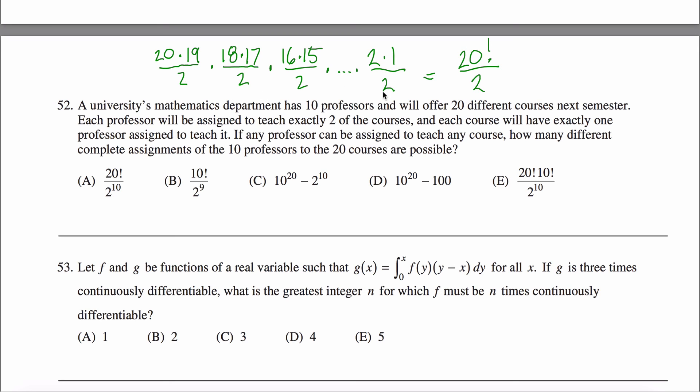Because there are 10 different professors. So I have 10 of these fractions that I'm multiplying together. What I'm trying to say is I got 10 of these twos. So this is the expression I'm looking for here. There it is. A. That'd be the answer to this question.